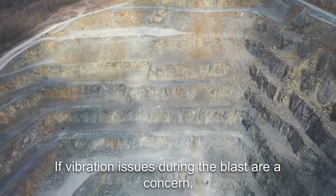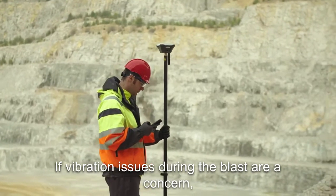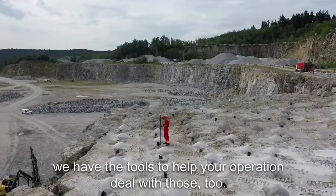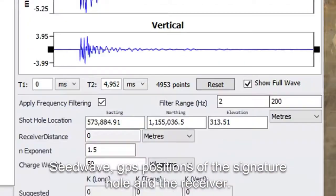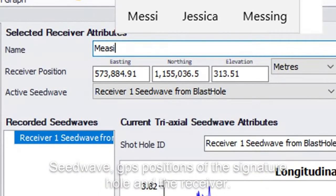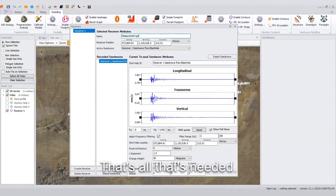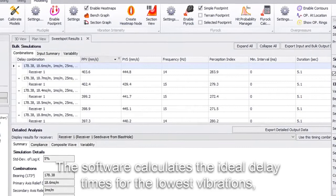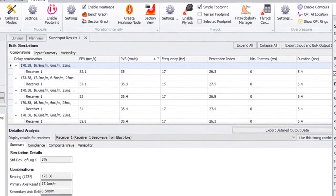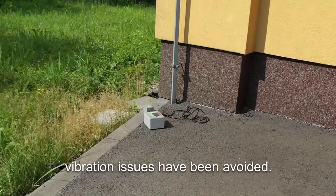If vibration issues during the blast are a concern, we have the tools to help your operation deal with those too. Seed wave, GPS positions of the signature hole, and the receiver. That's all that's needed. The software calculates the ideal delay times for the lowest vibrations. Vibration issues have been avoided.